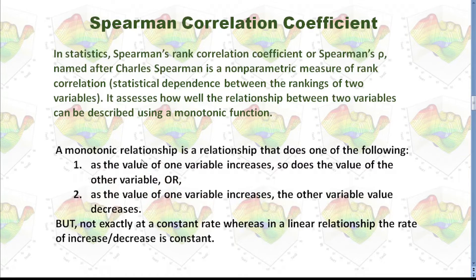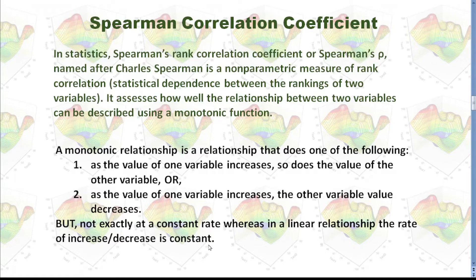What is a monotonic relationship? It is a relationship that does one of the following: if one variable increases, another variable also increases, or one variable increases and another variable decreases. If the two variables have a linear relationship, the rate of increase or decrease is constant. But when we use the Spearman correlation coefficient, we don't care about whether the rate is constant. If one variable increases along with another, or decreases along with another, we say they have a perfect Spearman correlation.